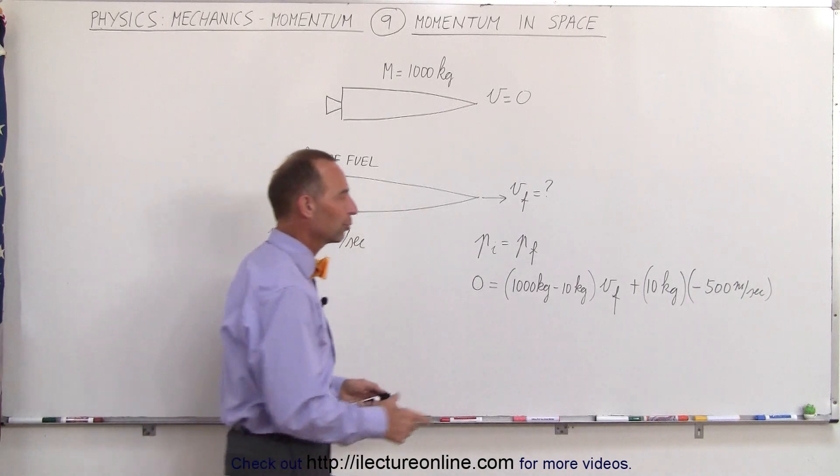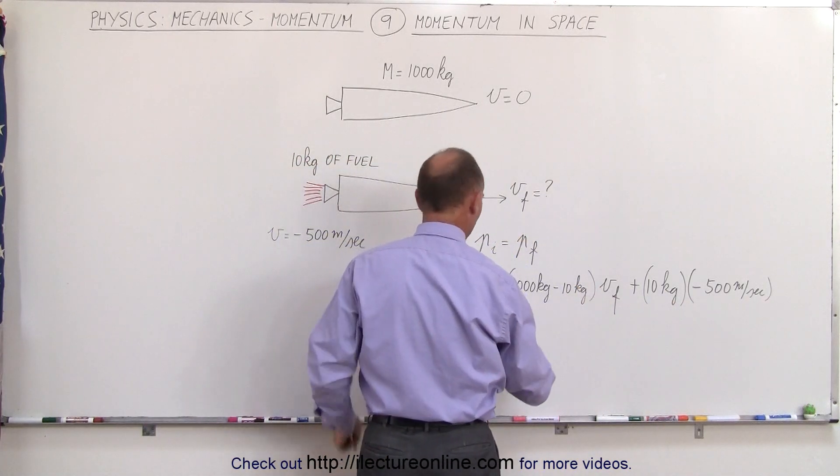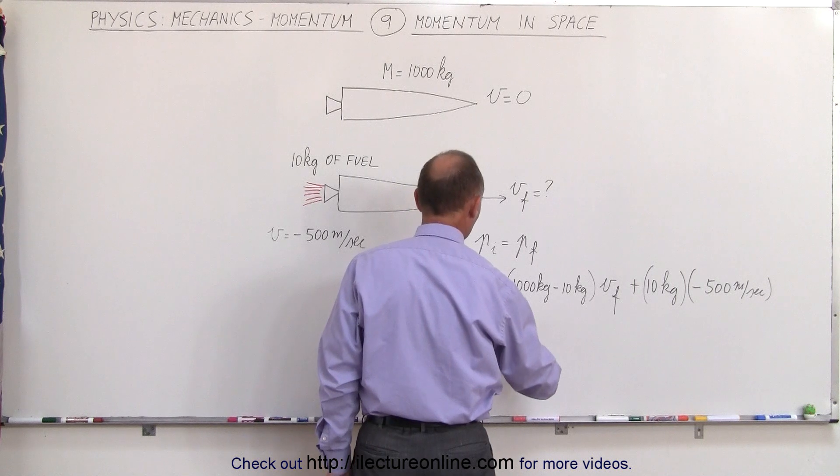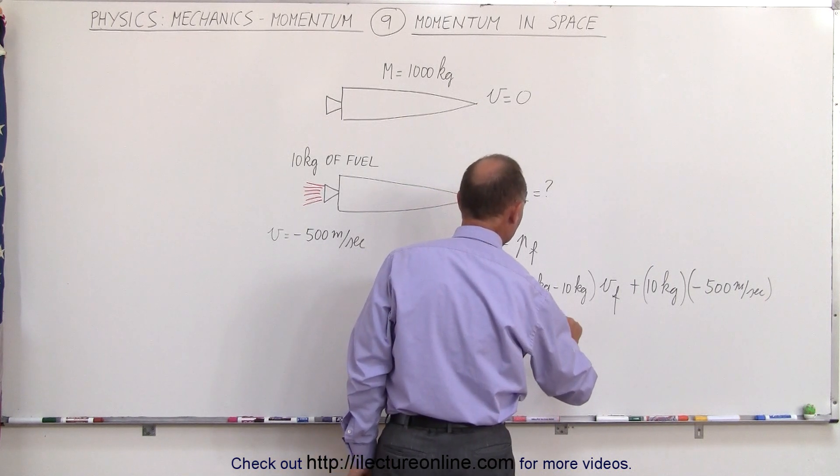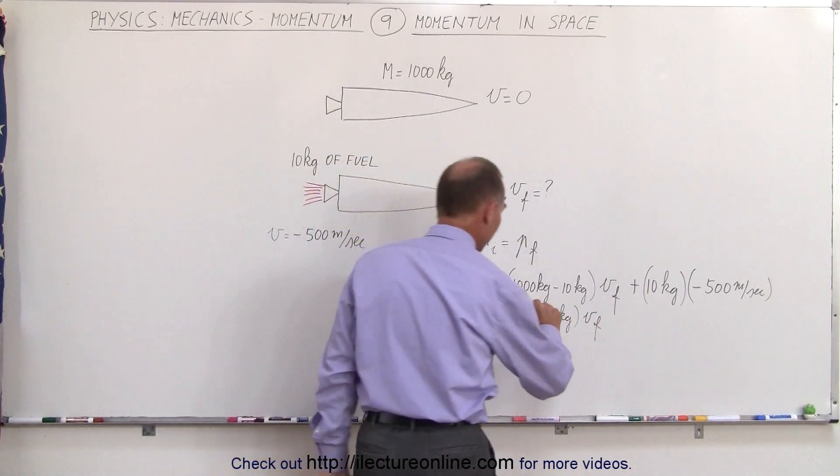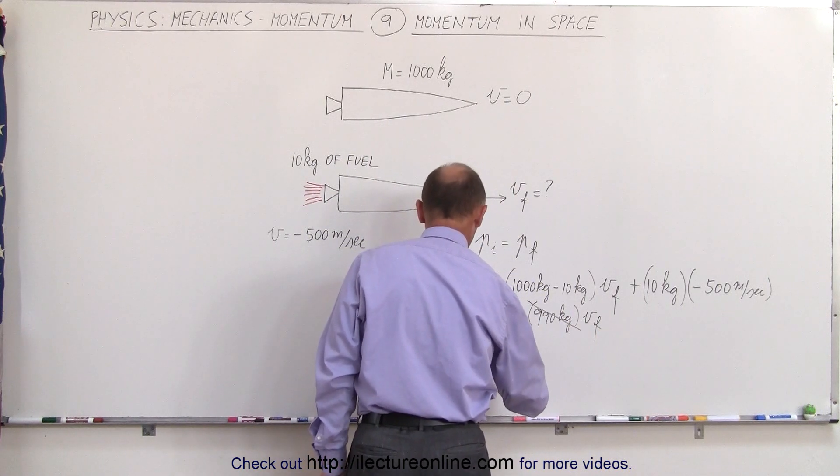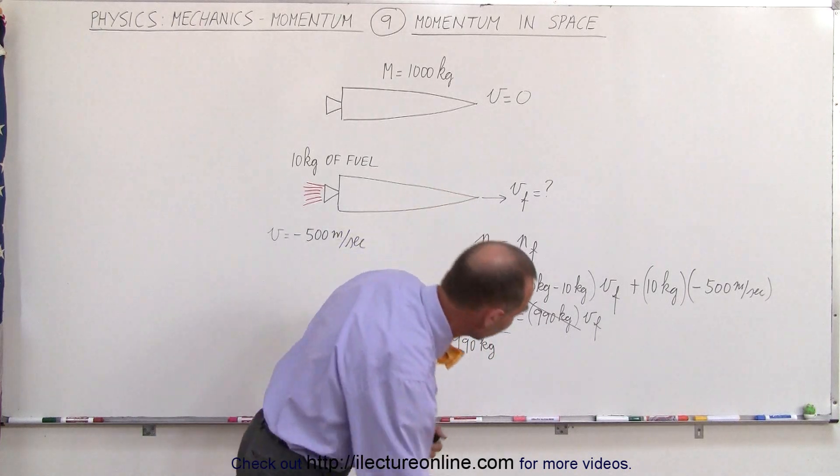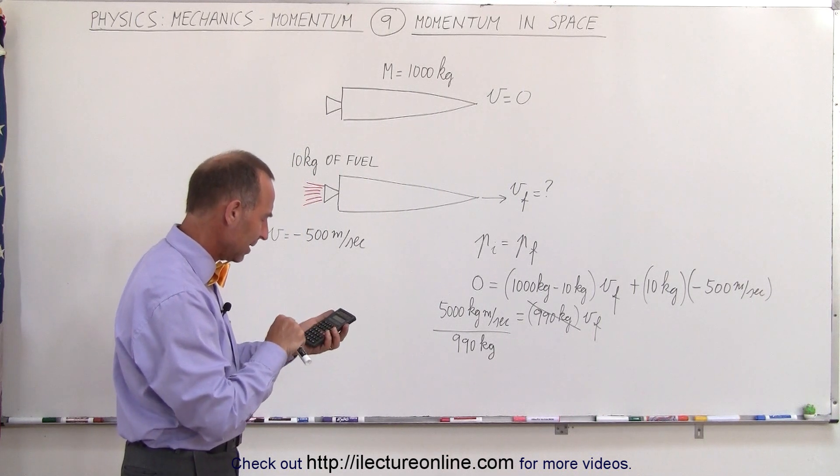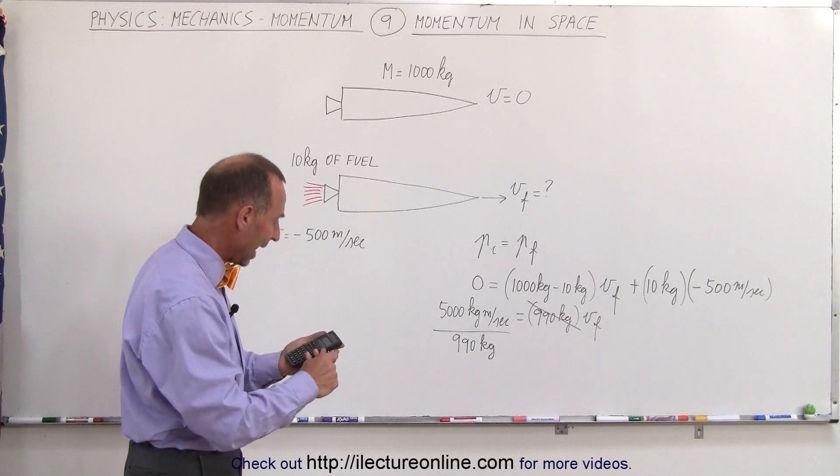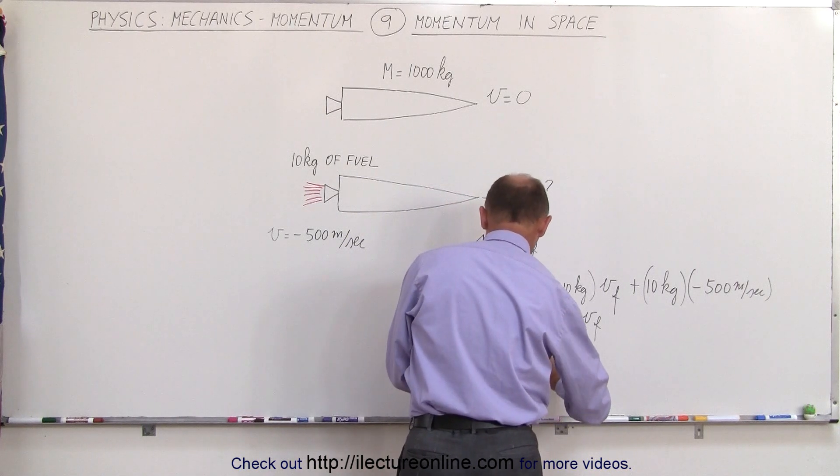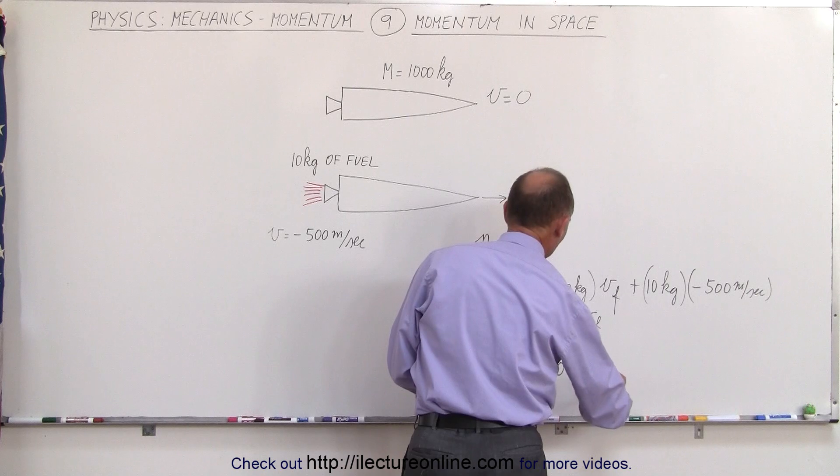So let's go ahead and solve that problem. First we'll move this over to the other side so we end up with 5000 kilogram meter per second is equal to 990 kilograms times v final. Now if we divide both sides by 990 kilograms we get 5000 divided by 990 and the spaceship will move forward at, well that's not very fast but at least something, v final will be equal to 5.05 meters per second.